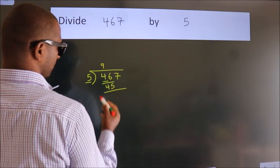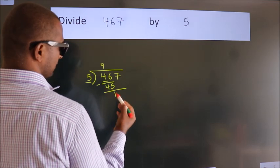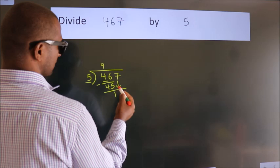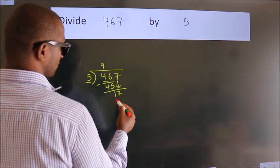Now we should subtract. We get 1. After this, bring down the beside number, so 7 down. So 17.